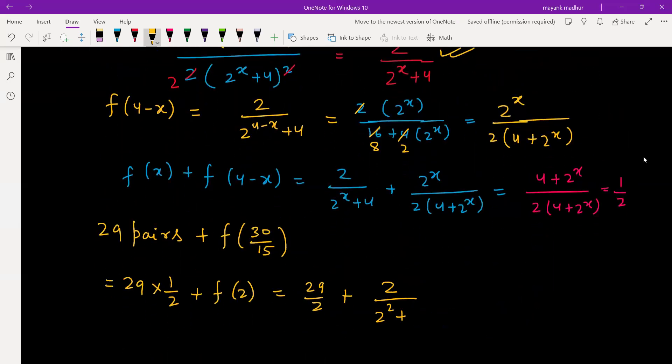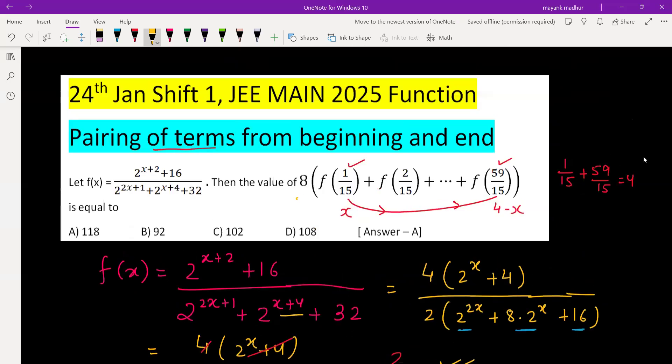f(2), we can plug over here, so it will be 2 divided by 2 squared plus 4. So it is 29 by 2 plus 2 by 8, which is 1 by 4. So it will be 58 plus 1, 59 by 4.